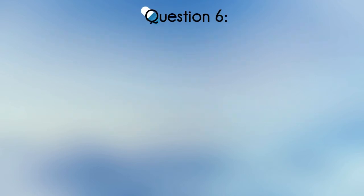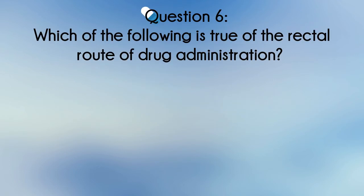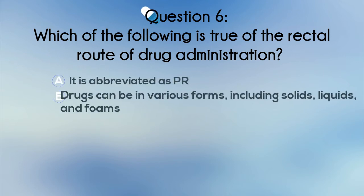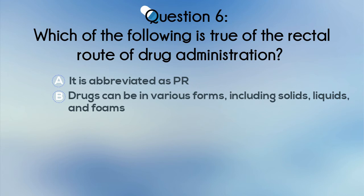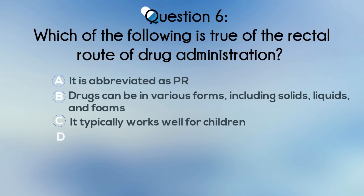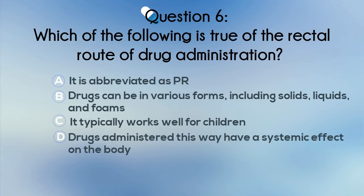Question 6. Which of the following is true of the rectal route of drug administration? A. It is abbreviated as PR. B. Drugs can be in various forms, including solids, liquids, and foams. C. It typically works well for children. Or D. Drugs administered this way have a systemic effect on the body.